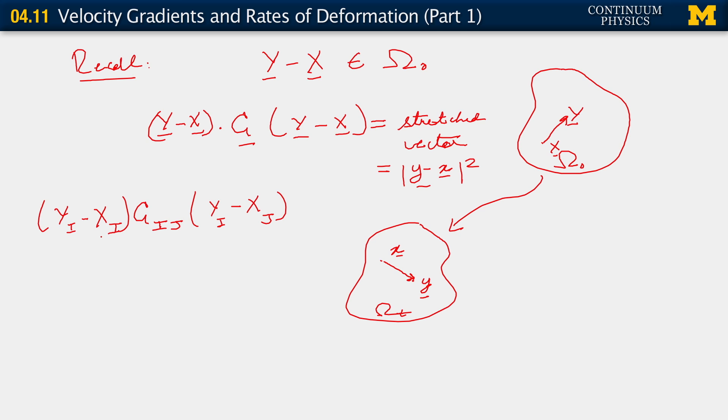It allows us to make sense of the above formula in the following way. Y minus X being a vector in omega naught, of course admits uppercase indices. So C also had better have uppercase indices for all of this to work out.